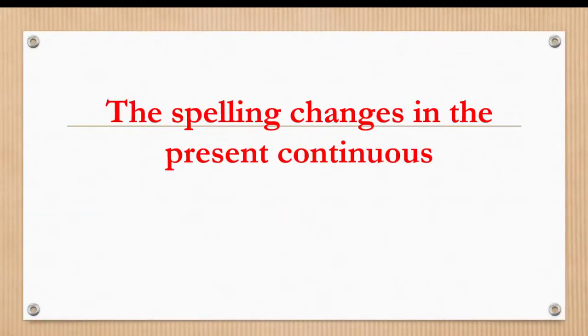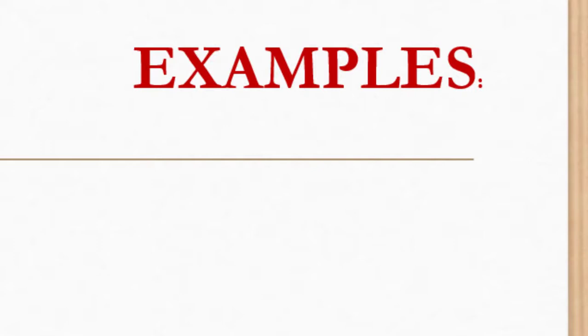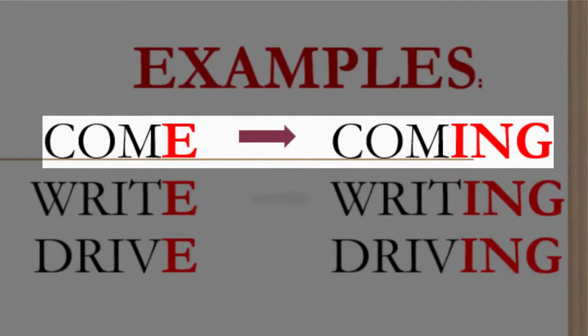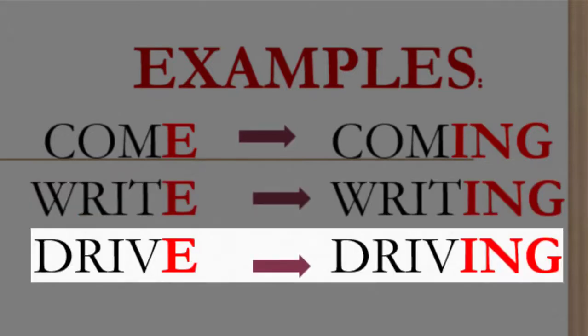The spelling changes in the present continuous. Spelling rule one: verbs ending with e, we omit the e and add ing. For example: come, coming; write, writing; drive, driving.